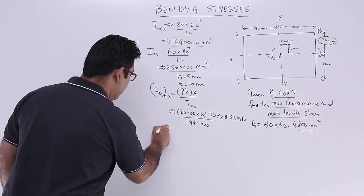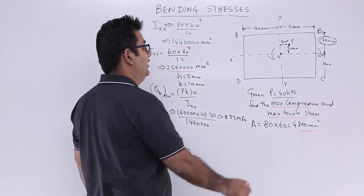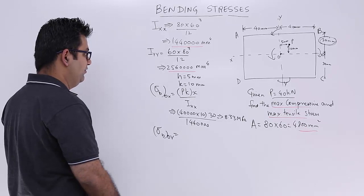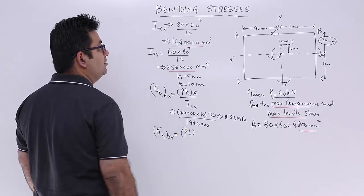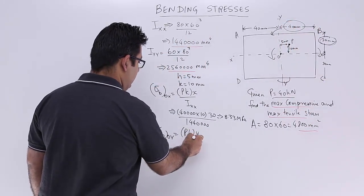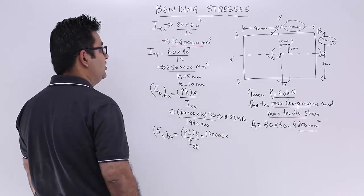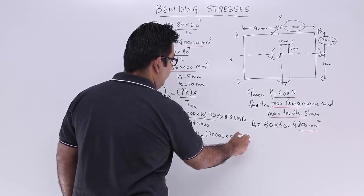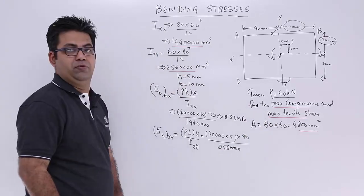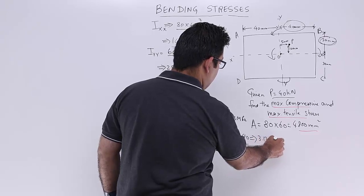Now you will find the maximum bending stress when the bending is about OY, that is about this. So you will have this value as P into H into, now the distance would be this thing, I will take this as y upon Iyy. So this is 40,000 into h, which is 5, into y, which is 40, upon 256 into 10 to the power 4. So when you do that calculation, you get a value which is 3.13 MPa.